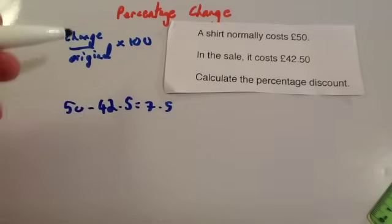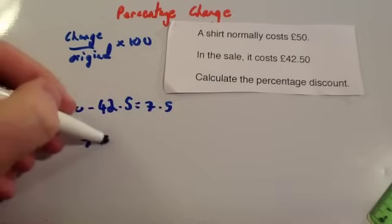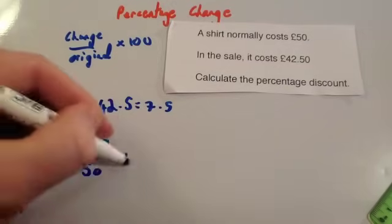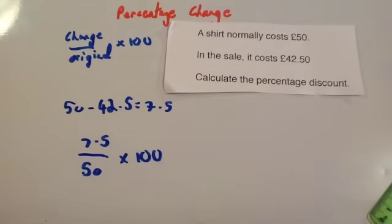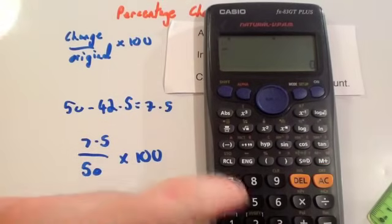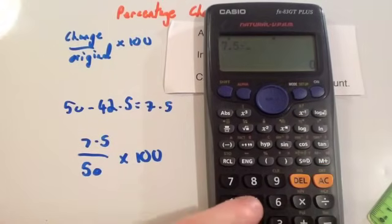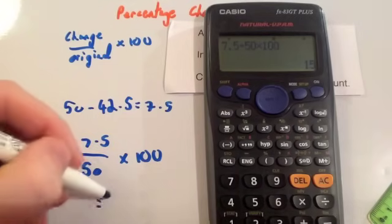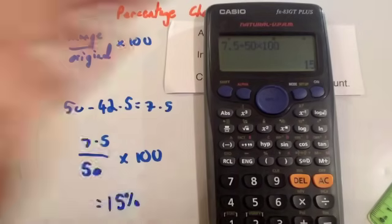And then we have to divide the change by the original. So 7.5 divided by the original, which is 50, and then times 100. So get your calculator and work out that. So 7.5 divided by 50 times 100. 15%. So the percentage discount is 15%.